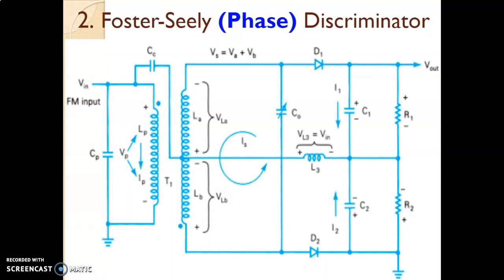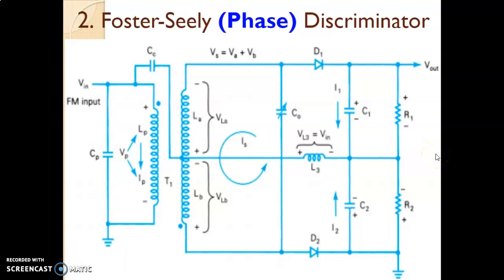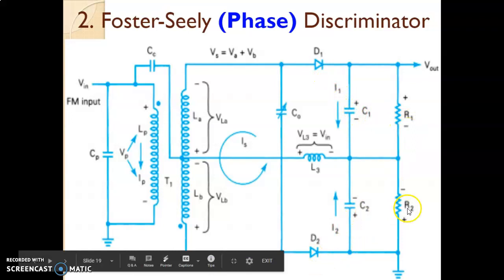This is the circuit diagram for the Foster-Seeley discriminator. Starting from the right-hand side, the output side is common with the balanced slope detector. D1, C1, R1 form envelope detector 1; D2, C2, R2 form envelope detector 2, and the output is taken across that particular point.